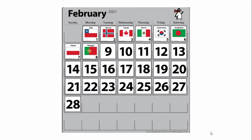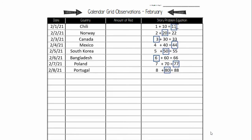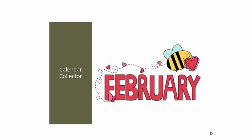Let's put all of those calendar markers into our calendar. Let's put all of those observations for the weekend and today into our calendar grid observation, and add those to the ones we've had so far for this month. February calendar collector.